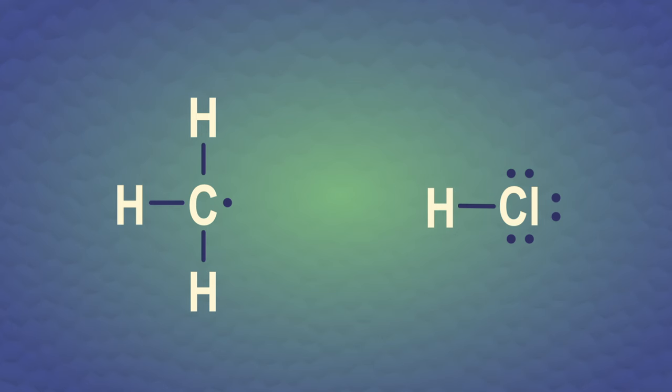So, as a result, a methyl radical forms with a single electron on the carbon, sitting happily in a p orbital.